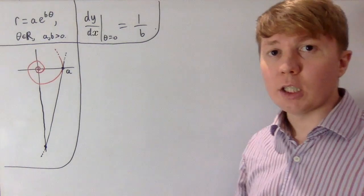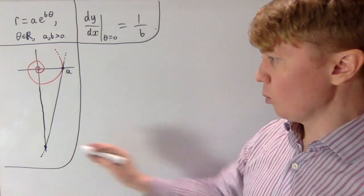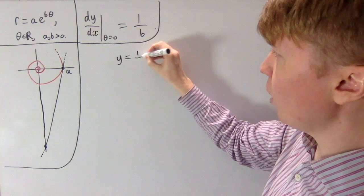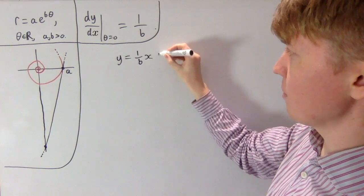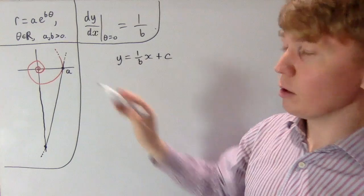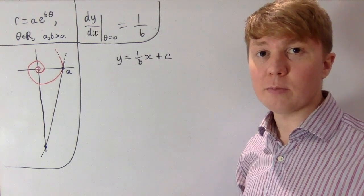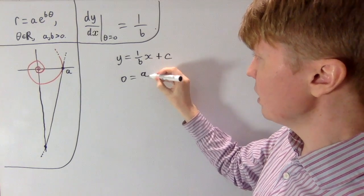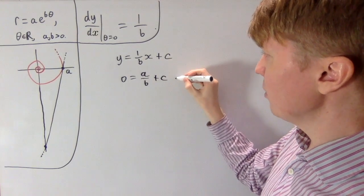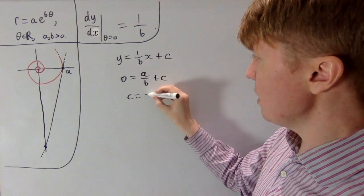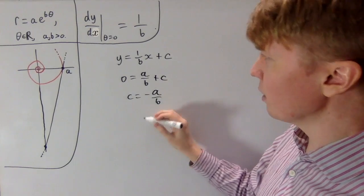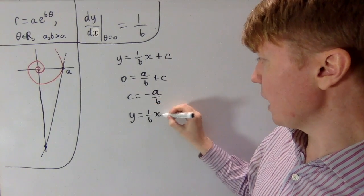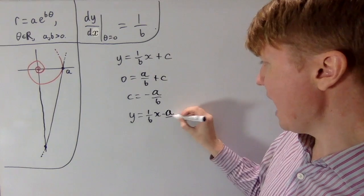Now that we have the gradient, finding the y-intercept is straightforward. The tangent line is y = (1/b)x + c. It passes through (a, 0), so substituting gives 0 = a/b + c, meaning c = −a/b. The equation of the tangent line is y = (1/b)x − a/b.